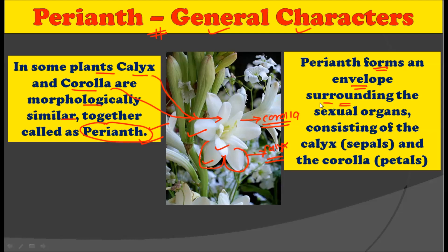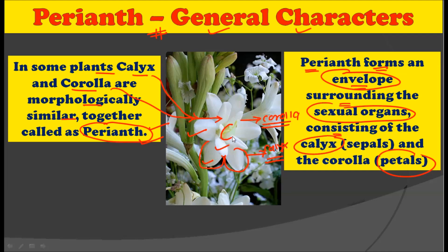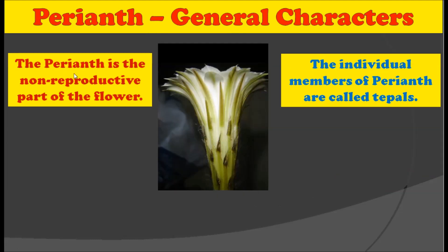The Perianth forms an envelope surrounding the sexual organs of the flower, consisting of calyx and corolla. As you can see in the picture, in the middle we have the sexual organs — that is the androecium and the gynoecium — and both these sexual organs are enclosed by the Perianth, that is the calyx and corolla.